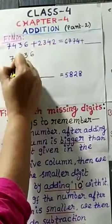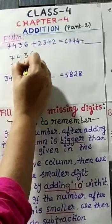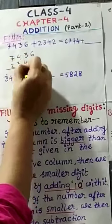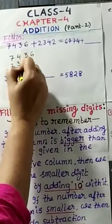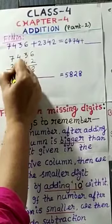First, 7,436 and 2,342. 6 plus 2, 8. 3 plus 4, 7. 3 plus 4, 7. 7 plus 2, 9.